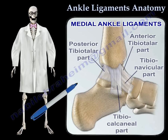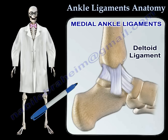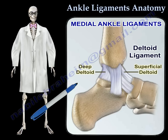The superficial deltoid arises from the anterior colliculus, while the deep deltoid arises from the posterior colliculus and the intercollicular groove. The deltoid ligament is the main stabilizer of the ankle joint during the stance phase, and is rarely injured by itself — it is usually associated with a fracture.